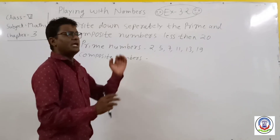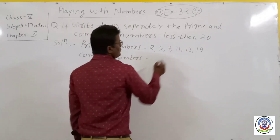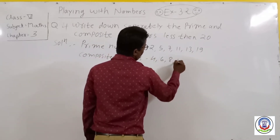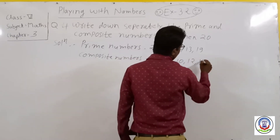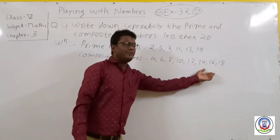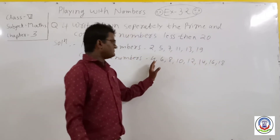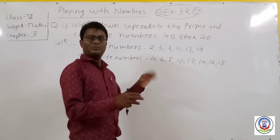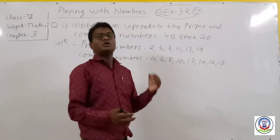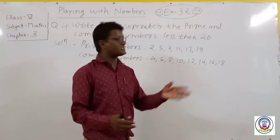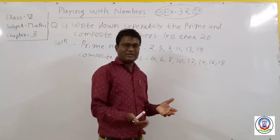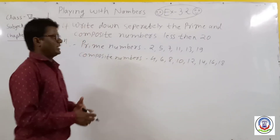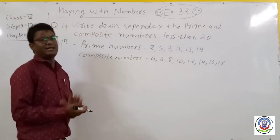Now, composite numbers are those which have more than two factors. For example, 4 has factors one, two and four — more than two factors. 12 has factors one, two, three, four, six, and 12 itself — more than two factors. So all numbers less than 20 that have more than two factors are composite numbers, and we have listed them separately.